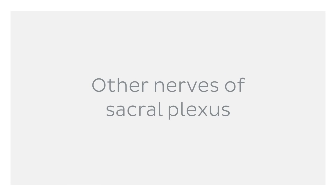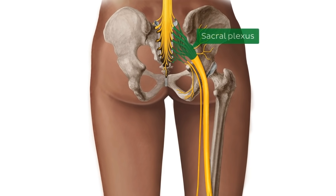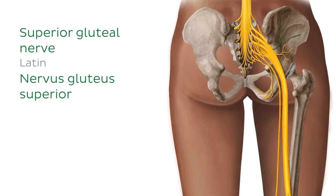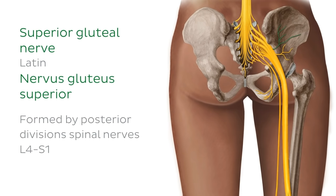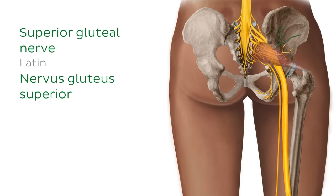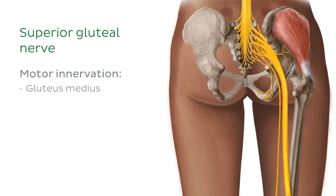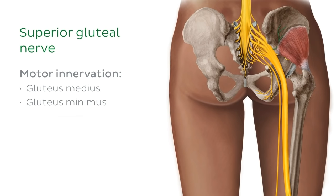It's time to leave the sciatic nerve now and to discuss some other branches of the sacral plexus. The sacral plexus gives off quite a few nerves, but we're just going to focus on the ones visible in this illustration. The first branch is the superior gluteal nerve, formed by the posterior divisions of spinal nerves L4 to S1, which leaves the pelvis via the greater sciatic foramen to enter the gluteal region. The superior gluteal nerve emerges above the piriformis, unlike the sciatic nerve, which emerges below this muscle.